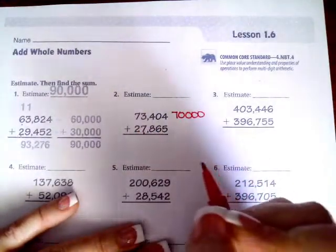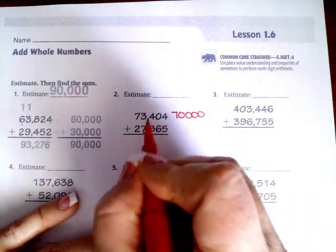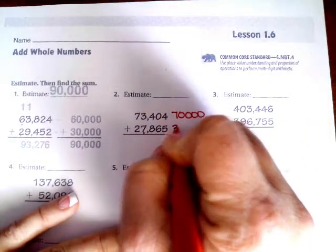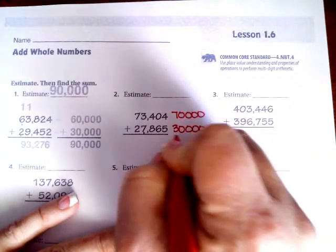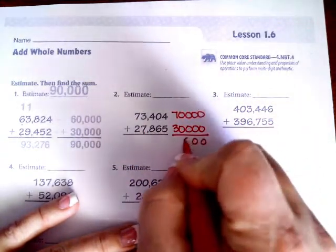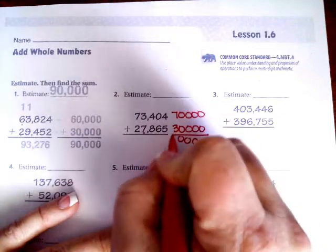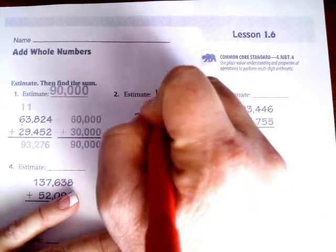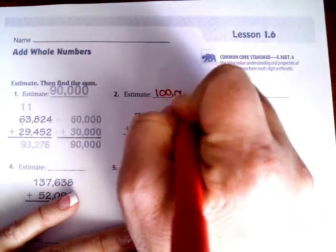This one, that is a seven. Remember, five or bigger and it's going to go up to a three, so this one is going to be 30,000. If I add those guys up, then I get 0, 0, 0, 0, and then 7 plus 3 is 10. So my estimate is going to be 100,000.